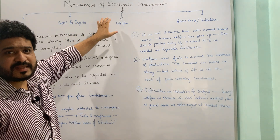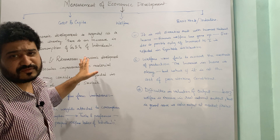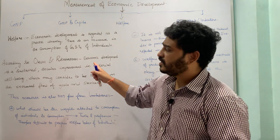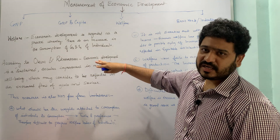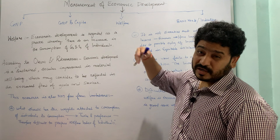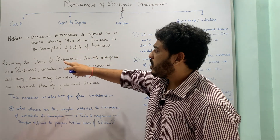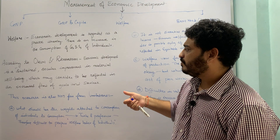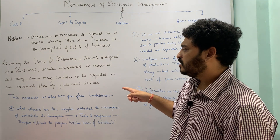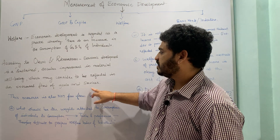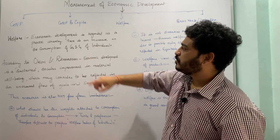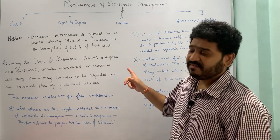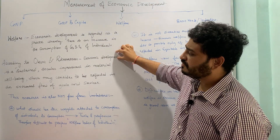We can say there is economic development happening when there is an increase in the consumption of goods and services of individuals. According to Okun and Richardson, economic development is a sustained secular improvement in material wellbeing, which may be considered to be reflected in an increase in the flow of goods and services. They are using welfare as a measure to define economic development.